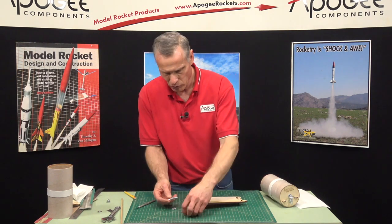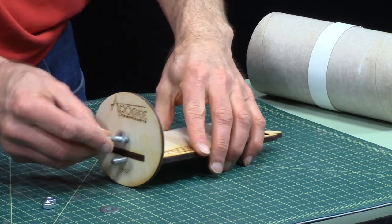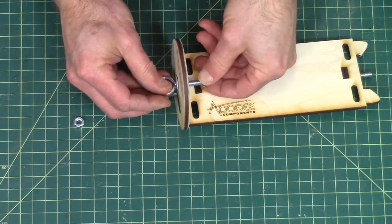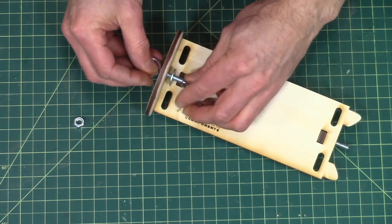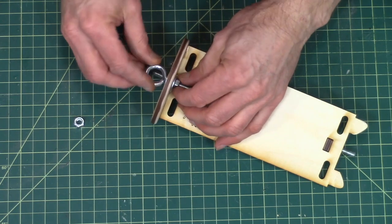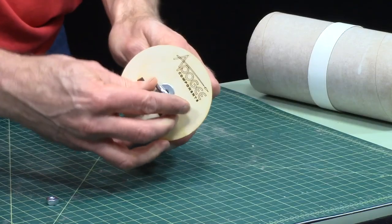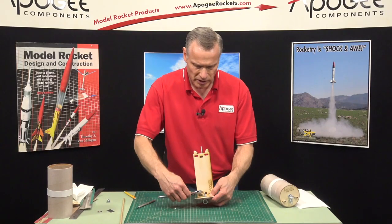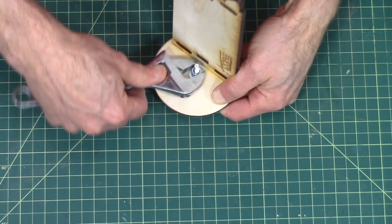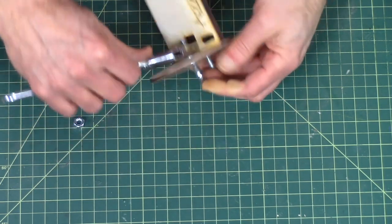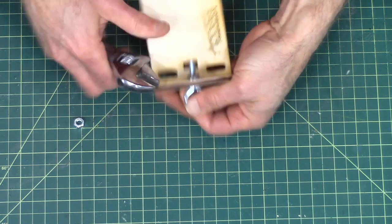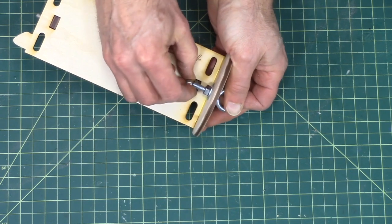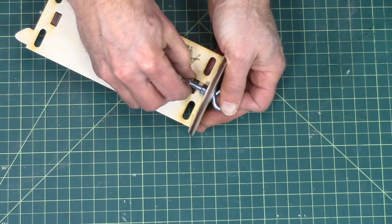Okay so the eye bolts. You'll put one washer on there, put it through, put another washer on the other side, put one nut on. Okay and I like to have the eye bolt parallel with the slot. So then we're going to take a wrench and crank down on that. It wants to spin on me. Okay and we're going to put the other nut on there.